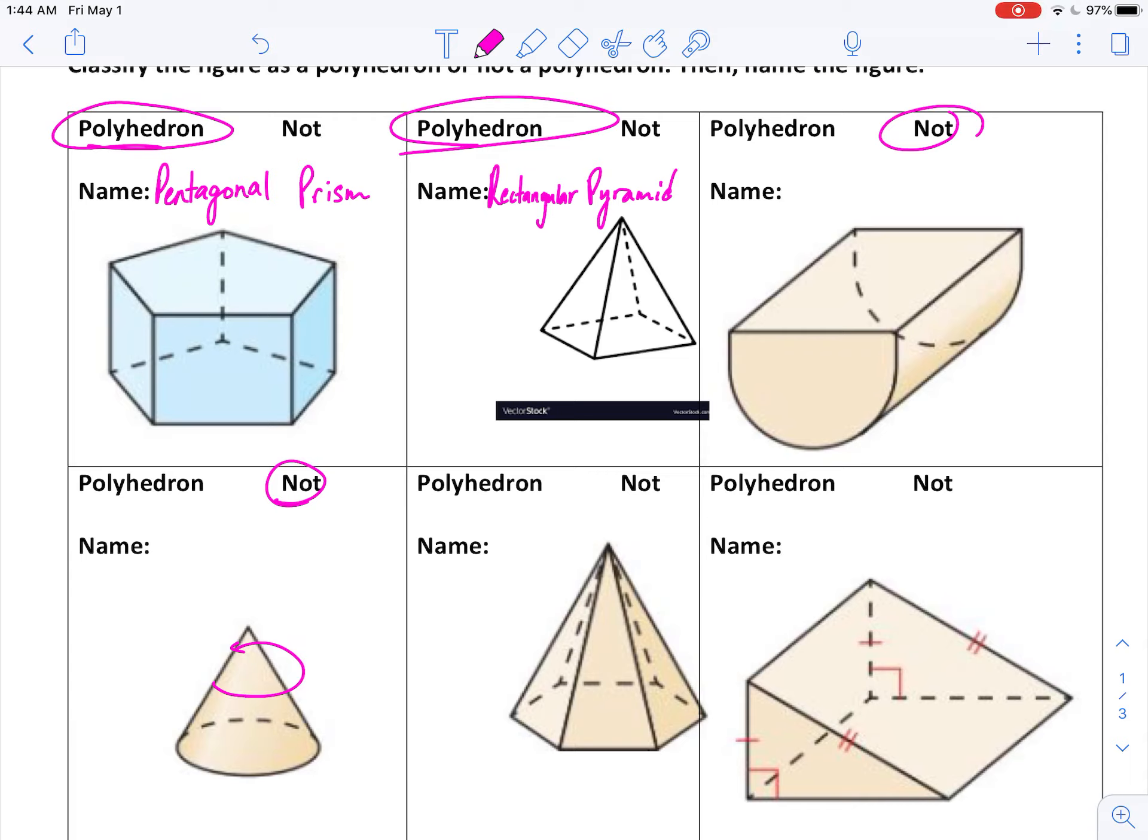Number 5, all these sides are flat. So what kind of shape is that? Well, it is a polyhedron. Specifically, is it a pyramid or a prism? Well, it is a pyramid. And how do I name pyramids? I will look at the base and I will see what kind of shape is the base here. And I have one, two, three, four, five, six sides. So six sides, it is a hexagon or a hexagonal pyramid.